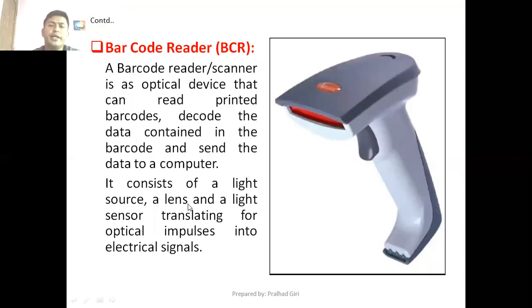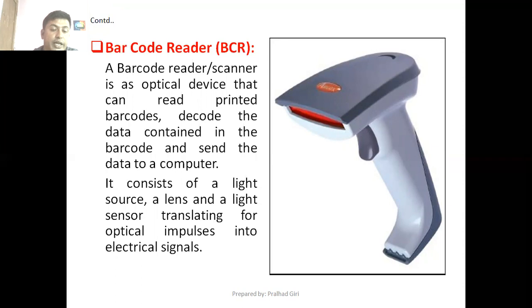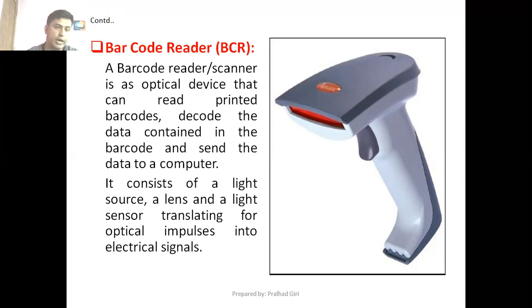The next input device is a barcode reader. A barcode reader or scanner is an optical device that can read printed barcodes, decode the data contained in the barcode, and send the data to a computer. It consists of a light source, a lens, and a light sensor that transmits optical impulses into electrical signals. Barcodes are series of white and black lines printed on goods, and the barcode reader reads those barcodes and sends all the information about the goods to the computer.